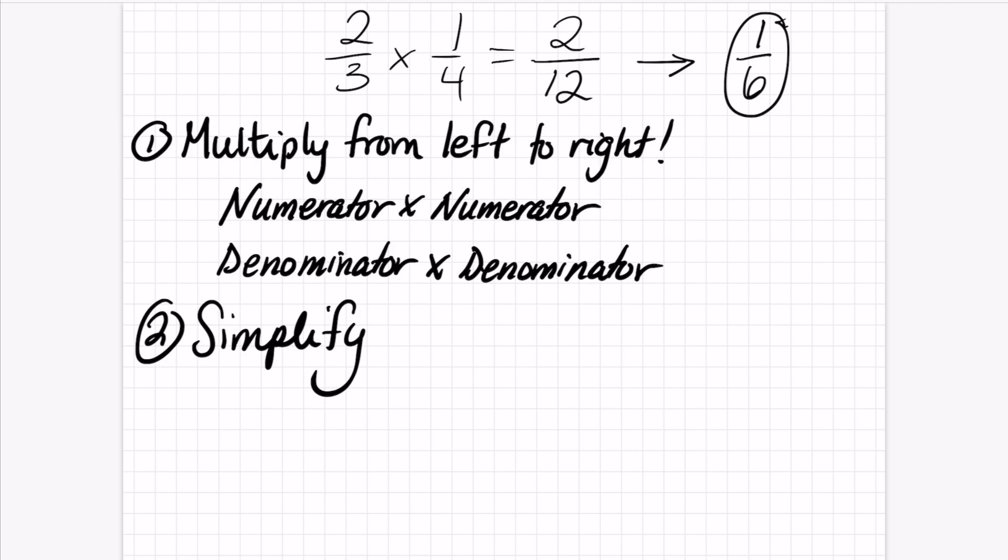So even if I have another example, even if I picked 3/8 times 9/10, again, I'm just going right across numerator times numerator, 27 over 80. So that's what's really easy about this. You can have to simplify, but pretty simple.